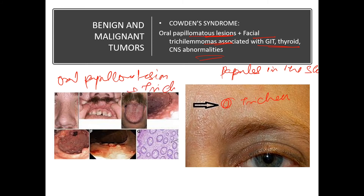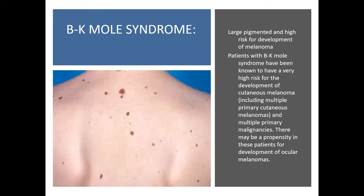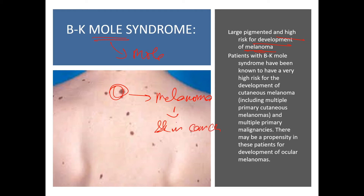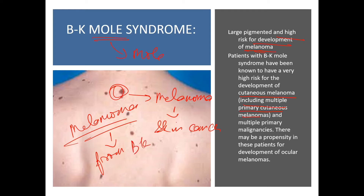BK Mole syndrome — from the name itself you know there are large pigmented moles with a high risk of development of melanoma. You can see there are large moles here. Patients with BK Mole syndrome have a very high risk of developing cutaneous melanoma, including multiple primary cutaneous melanoma. In summary, there are high chances of developing melanoma from BK Mole syndrome.